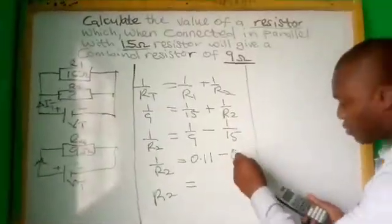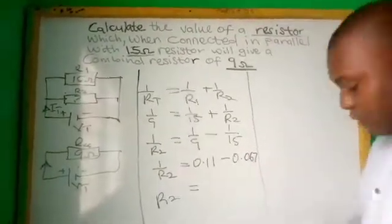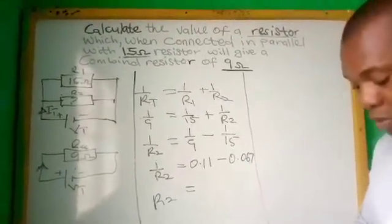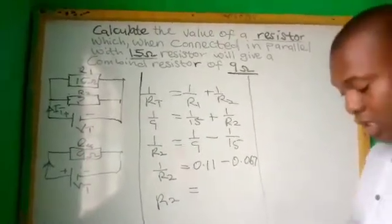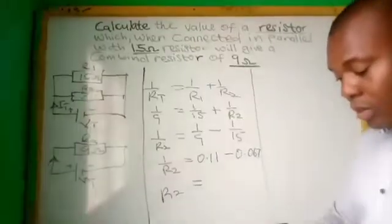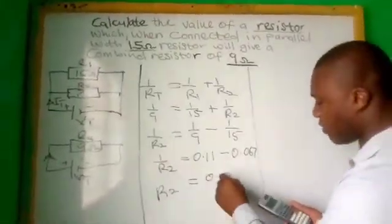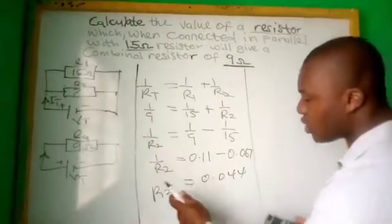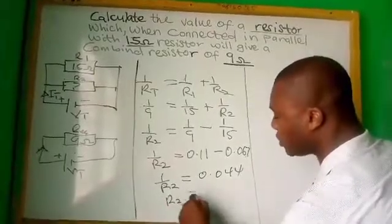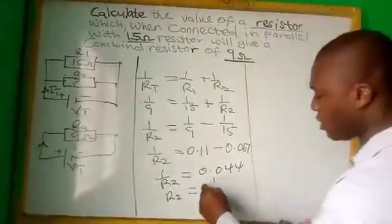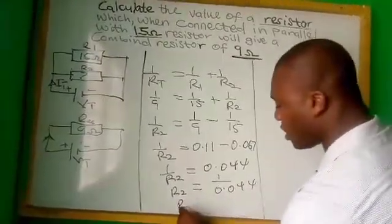So let's check carefully: 0.111 minus 0.067, the answer becomes 0.044. So here we see our R2 is equal to 1 over 0.044, so our R2 becomes 1 divided by 0.044, which is 22.7 ohms.